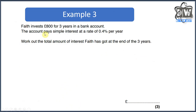Faith invests £800 for three years into a bank account. The account pays simple interest at a rate of 0.4 percent per year — just be careful, this is not four percent. Work out the total amount of interest Faith is going to have at the end of three years. Remember: take the percentage, multiply it by the number of years, then use that figure. I'd like you to give this a go — it's quite a tough question but use your common sense. Pause the video, give it a go, and come back and see if you've got it right.